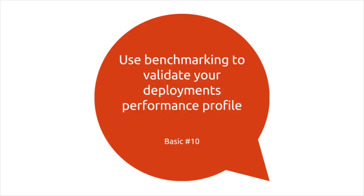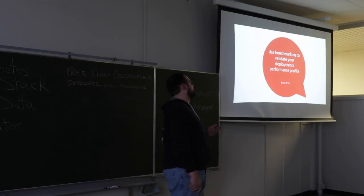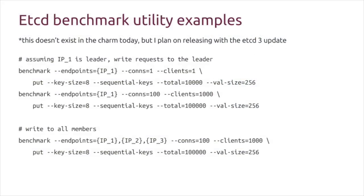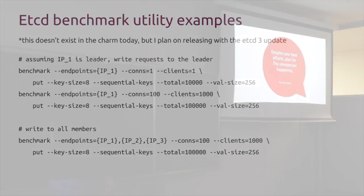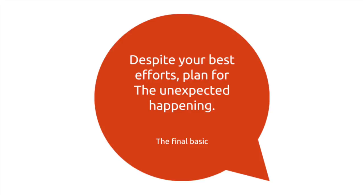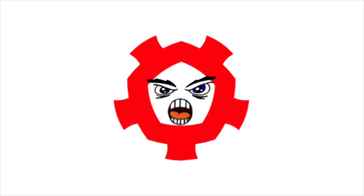The final bit I really want to cover is to use benchmarking to validate your deployments. etcd doesn't talk about this a lot, but they run a benchmarking tool and published some numbers. I'm going to ship this with the etcd3 update in the charm — every time you deploy etcd, you can run an action, point it at your endpoints, tell it all the different parameters you want, and it will spit back performance numbers. This is a great way to figure out how your deployment formation is going to perform when you put it into production. And despite your best efforts and all the preplanning, unexpected things will happen — plan for the worst. Whenever you see an angry etcd, you don't have to run. You've trained for this day.